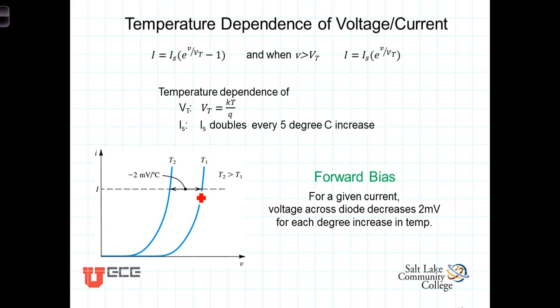So we're talking about for a given current, the greater the temperature, the smaller the voltage you will experience for that current. Heating up the diode makes it so the same current flows at lower voltages.